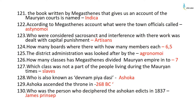The book written by Megasthenes giving an account of the Mauryan society is named Indika. According to Megasthenes' account, the town officials were called Astynomoi. Artisans were considered sacrosanct, and interference with their work was dealt with capital punishment. There were six boards with five members each. The district administration was looked after by the Agoranomoi.